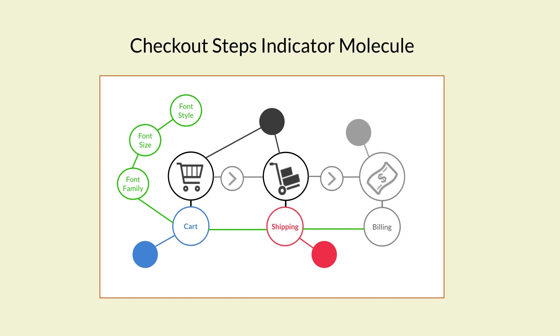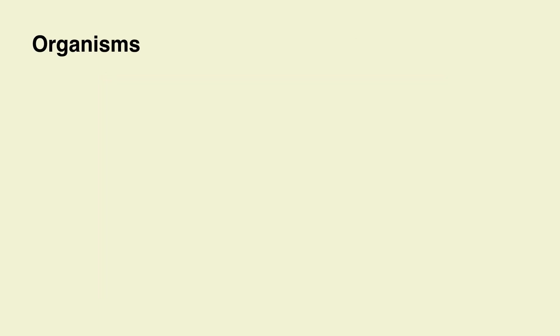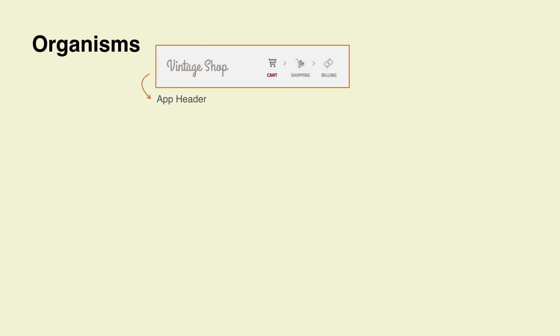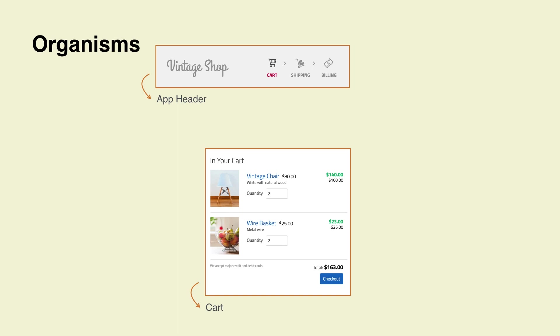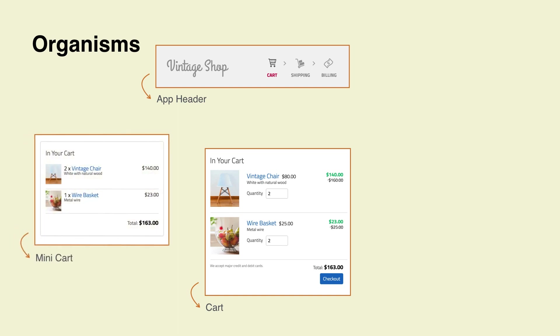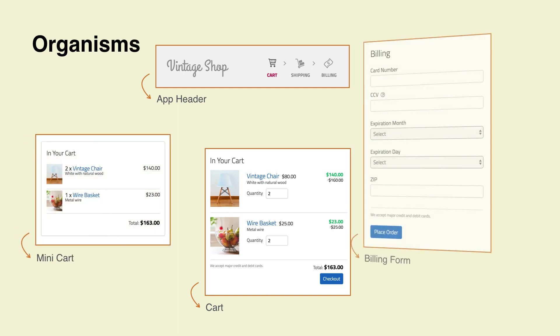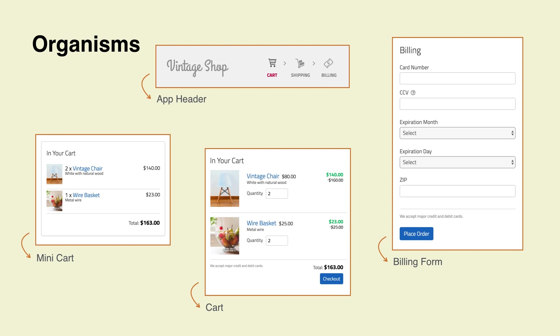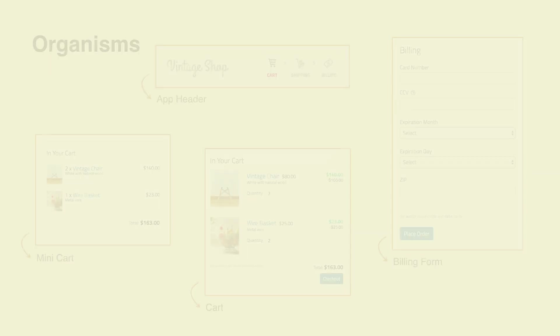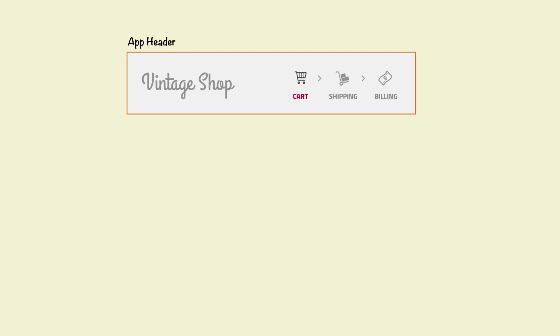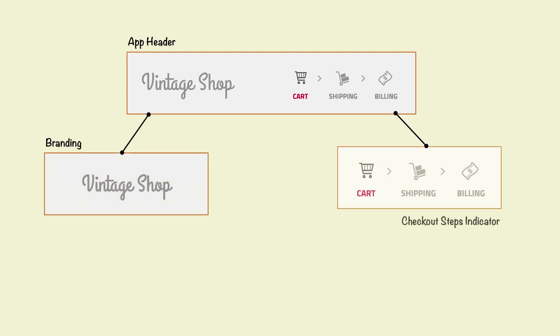As in nature, when interfaces grow in complexity and molecules bind together, the results are organisms. These organisms translate in the UI as defining sections of the application, and are more complex and contain more interactions. For example, the app header, as well as the cart, mini cart, and the shipping and billing forms are organisms. From a modular design perspective, you can see how organisms are systems themselves, comprised by other modules like molecules, and can have their own rules like atoms.